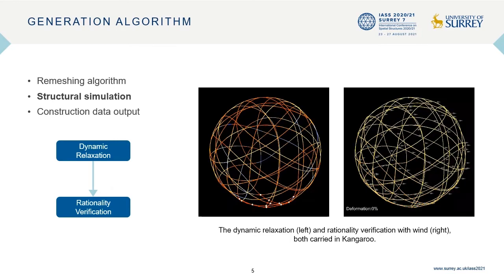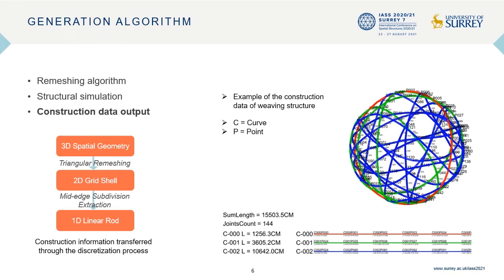The last step of our algorithm is to turn the polylines into construction data. A map of the length and node position information is generated, including their sequence numbers, the total length, the number of each node, its distance from the origin, and its distance from the previous node. The C in this map means curve and the P means point. During this whole process, the information of the 3D spatial geometry can be simplified into several marks on the one-dimensional rods, removing the need for complex CNC machines or templates.